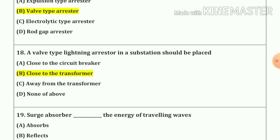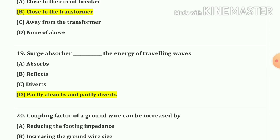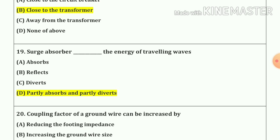Question number 18. A valve type lightning arrester in a substation should be placed close to the transformer. Question number 19. Surge absorbers partly absorb and partly divert the energy of travelling waves.